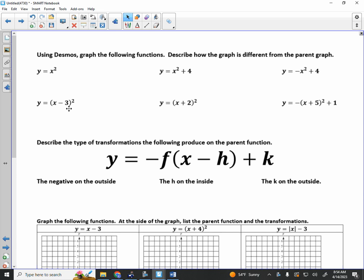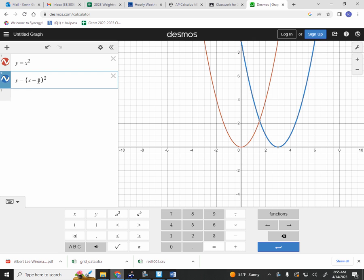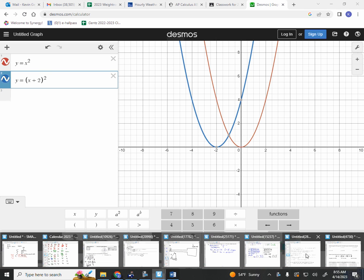Anyone want to guess what's going to happen with the x plus 2 squared? Let's see if it goes left 2. We'll try it. Plus 2, and sure enough, yep, you're right. Underneath the plus 2, write left 2. Went left 2 on us.